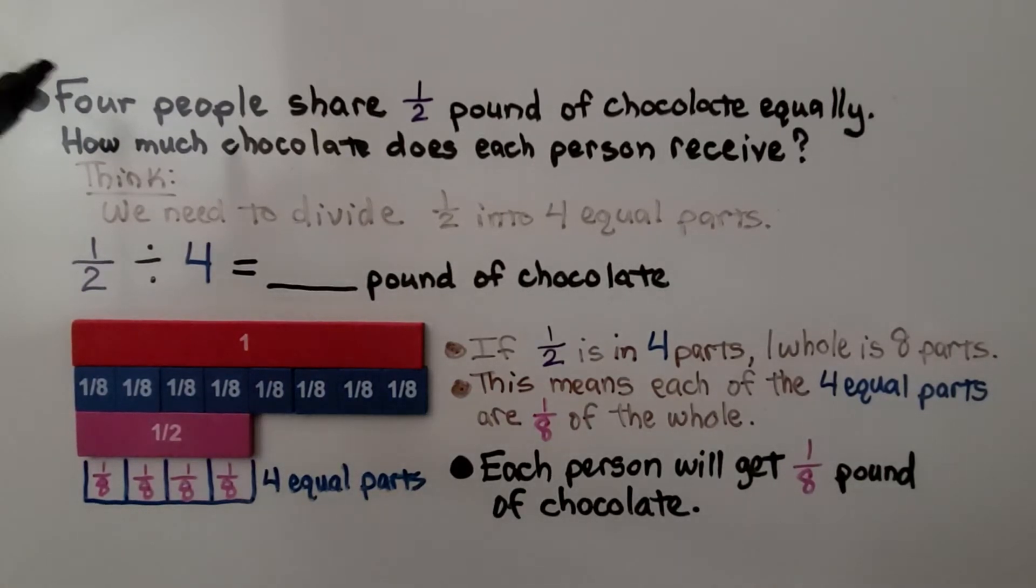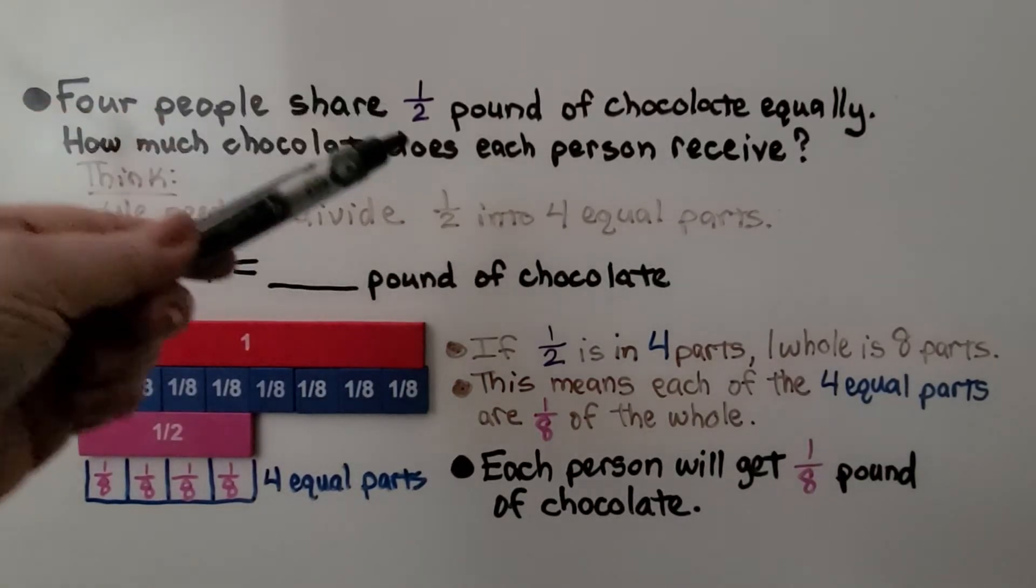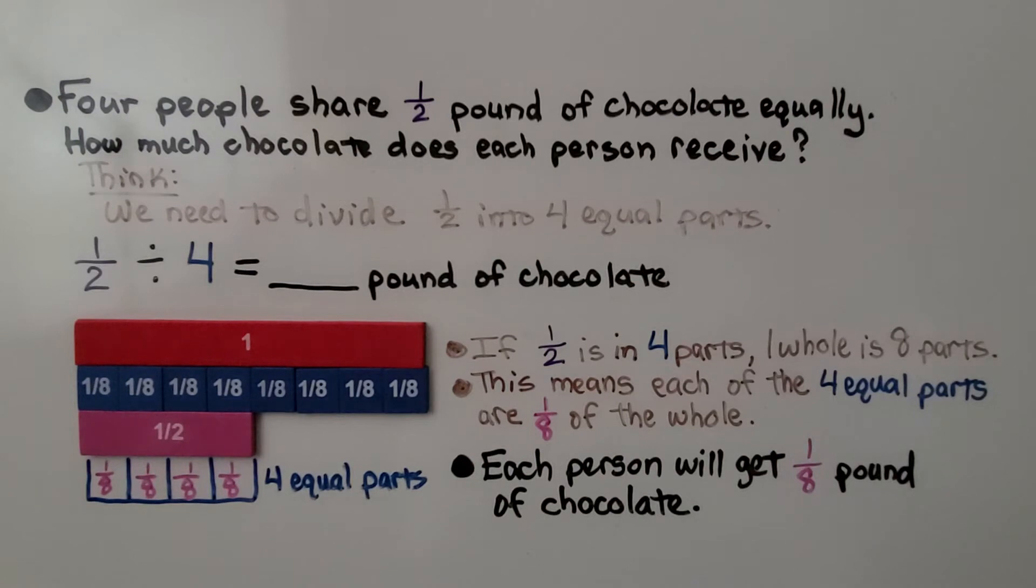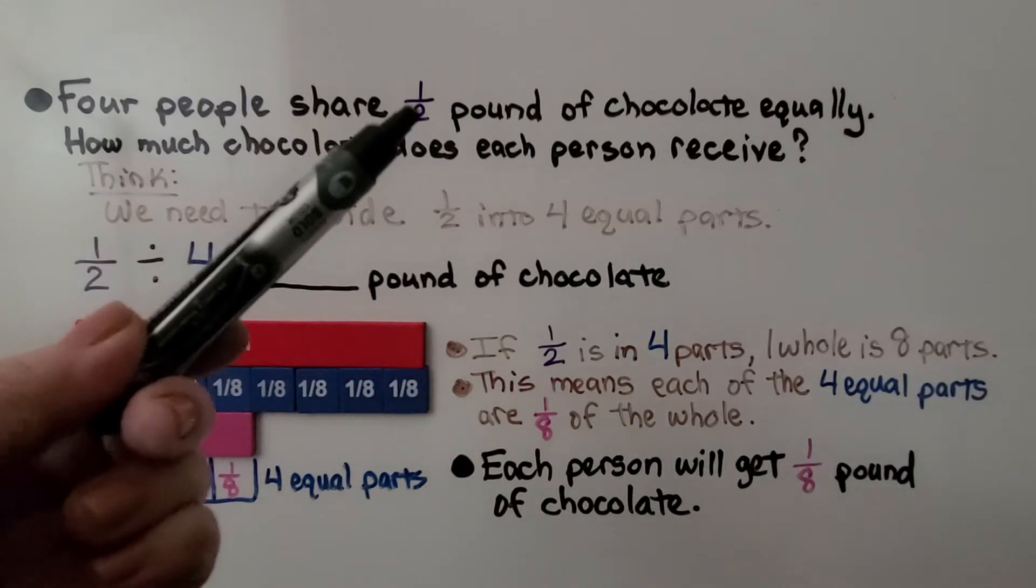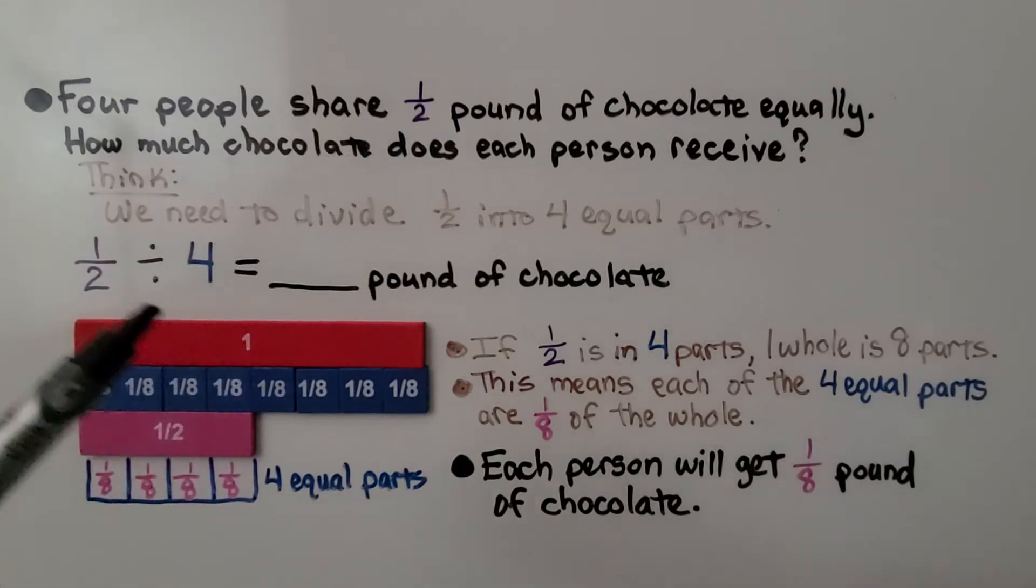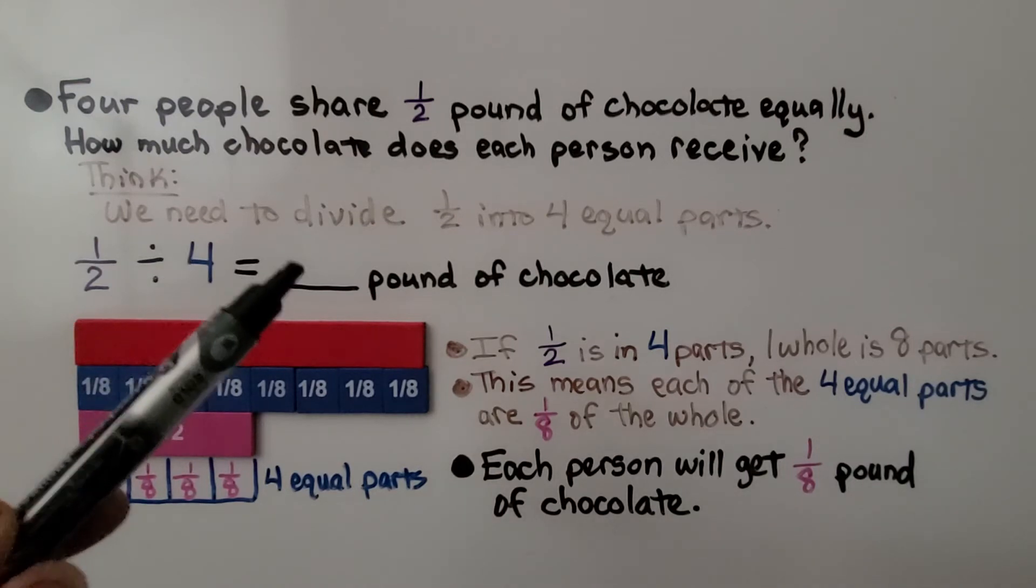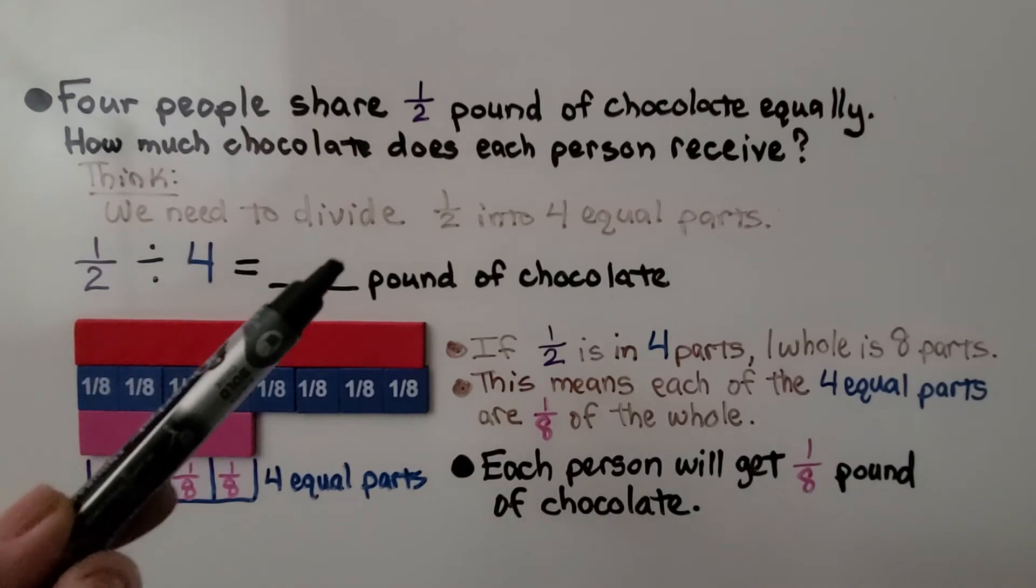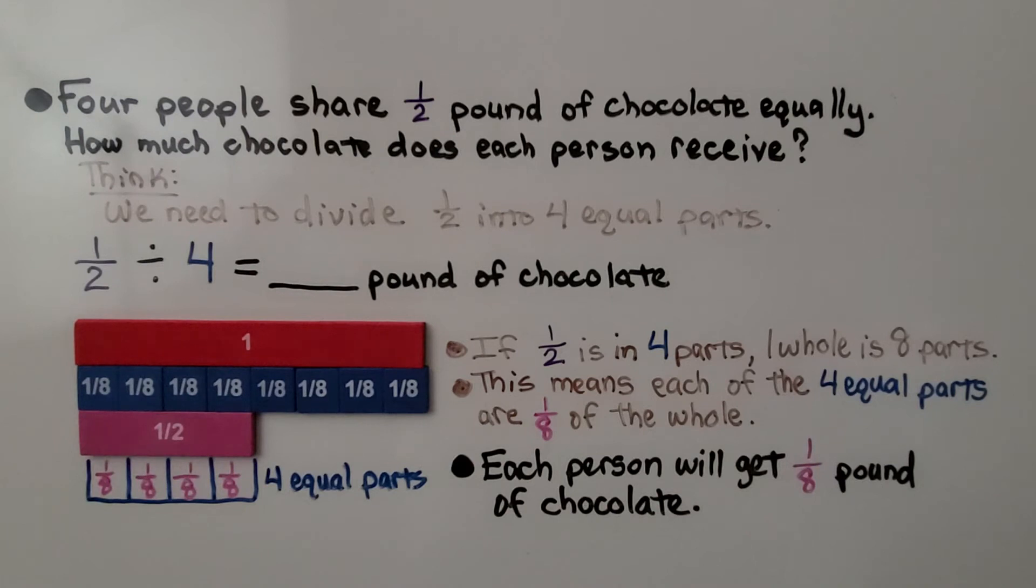Here we have a word problem. Four people share one-half pound of chocolate equally. How much chocolate does each person receive? So we think we need to divide one-half into four equal parts. We have one-half divided by four. That's going to tell us how many pounds of chocolate each person will get.